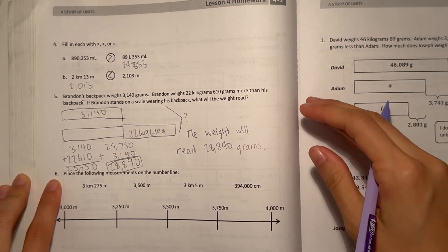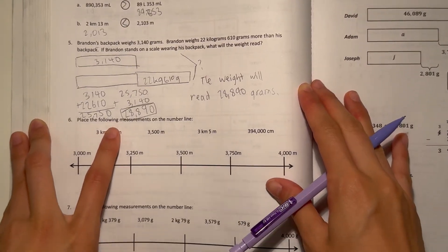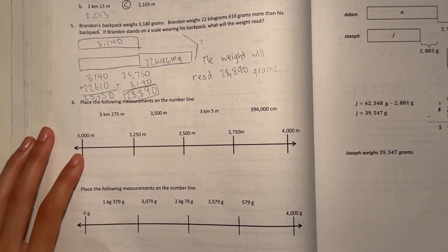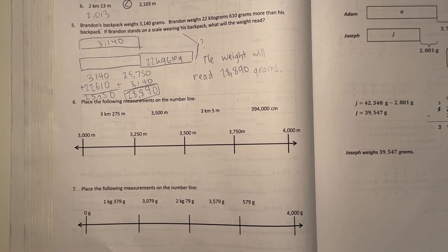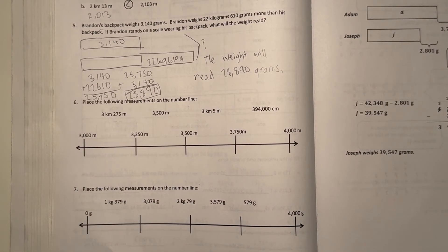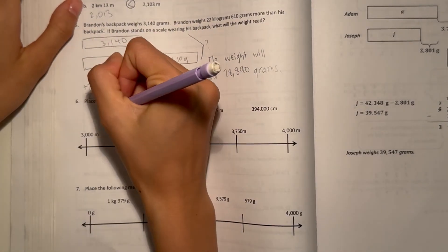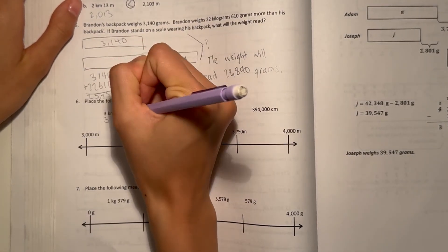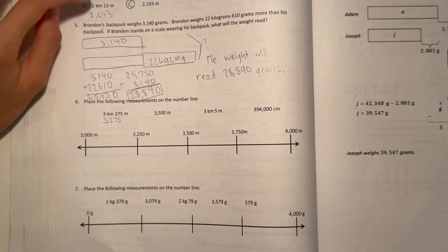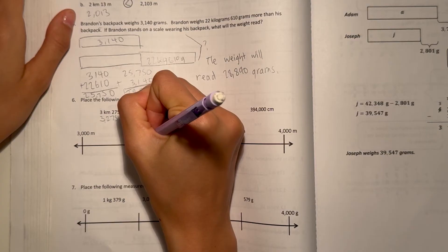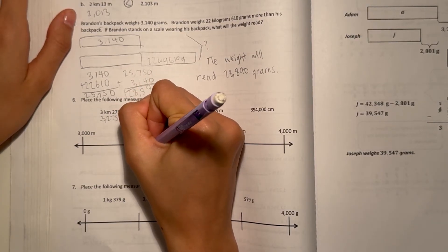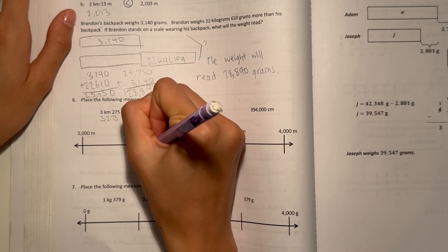Alright, number 6. Place the following measurements on the number line. Well, we have 3,000 to 4,000 meters. So 3 kilometers, 275 meters. If we make that into meters, that would be 3 times 1,000, that's 3,000. And then 275 is already in meters form. So this number would go around over here on the number line.